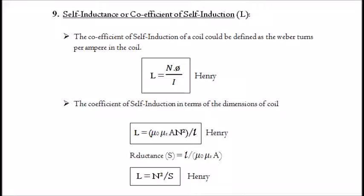9. Self-inductance or coefficient of self-induction, L. The coefficient of self-induction of a coil is defined as the weber-turns per ampere in the coil. It is given by: L equals N·φ divided by I. The coefficient of self-induction in terms of the dimensions of the coil is: L equals μ₀·μᵣ·A·N² divided by l. We know that reluctance S equals l divided by (μ₀·μᵣ·A), therefore L equals N² divided by S.